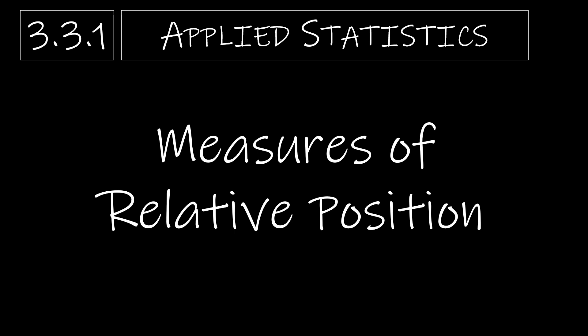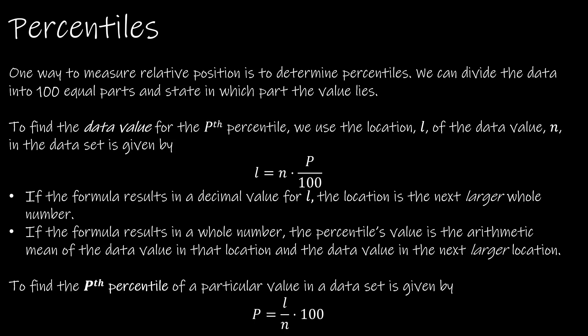This is the first video of section 3.3 talking about measures of relative position. The first measure of relative position we'd like to talk about is the percentiles. Essentially what we do in a percentile is we take all of our data and divide it up into 100 parts, and 100 is simply because we're dealing with a percentile, which means per 100.